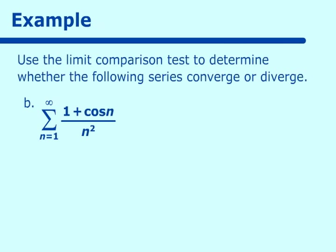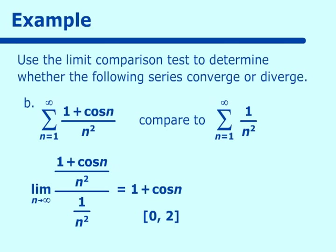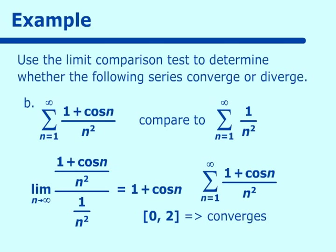Next example: 1 plus cosine n over n squared. We know cosine oscillates between negative 1 and 1 and won't make much difference as we go out to infinity. So we compare this to 1 over n squared. We take the limit as n approaches infinity of (1 + cos n)/n² over 1/n². The limit is approximately 1 plus cosine n, which ranges from 0 to 2 — any finite number — so the series 1 plus cosine n over n squared converges.